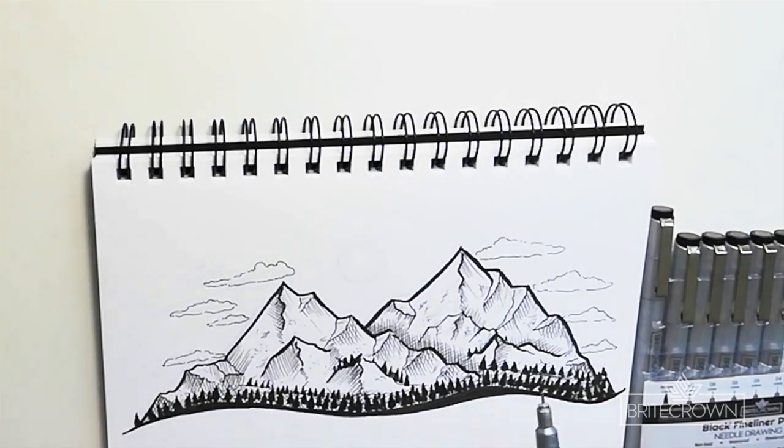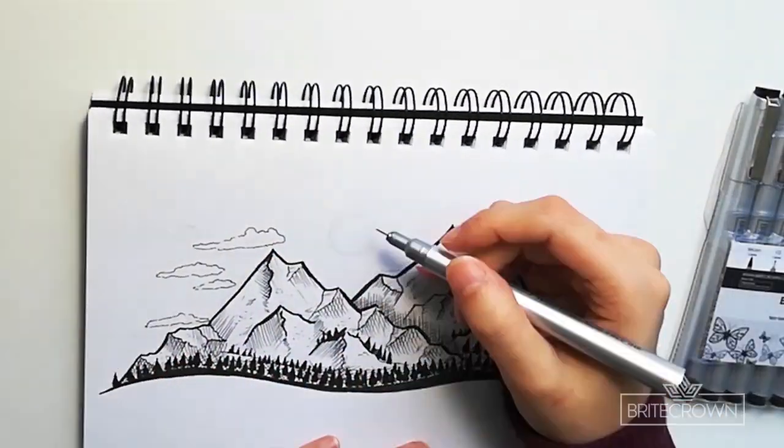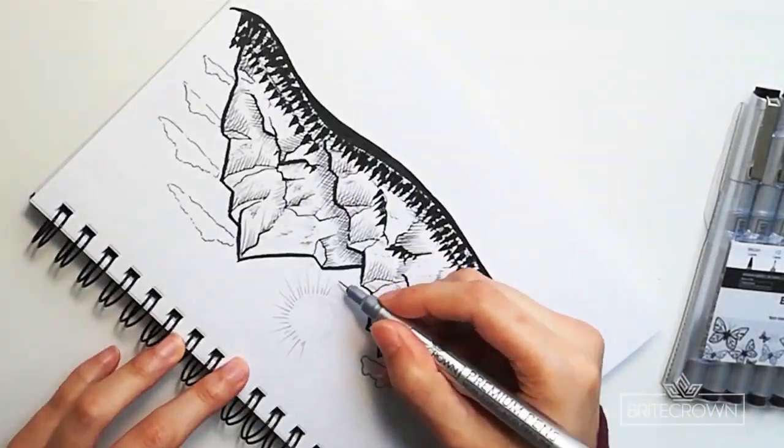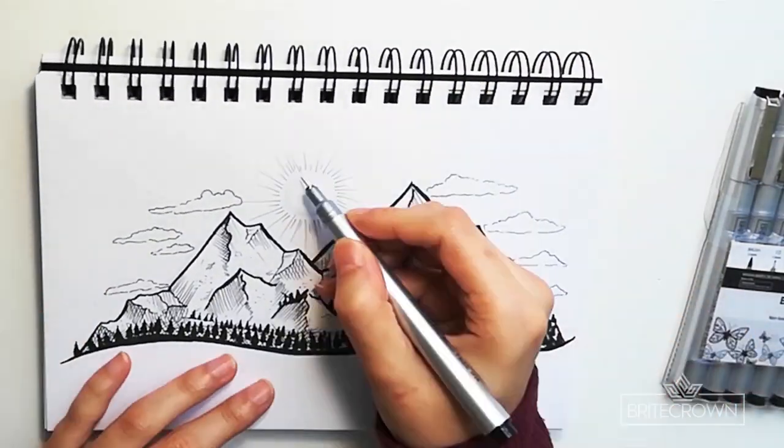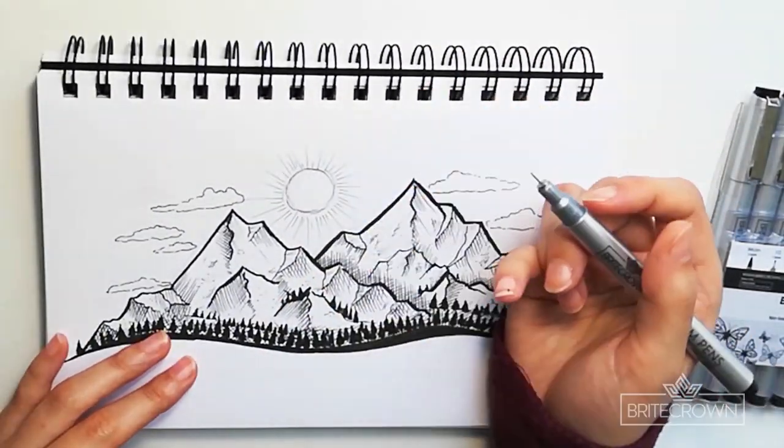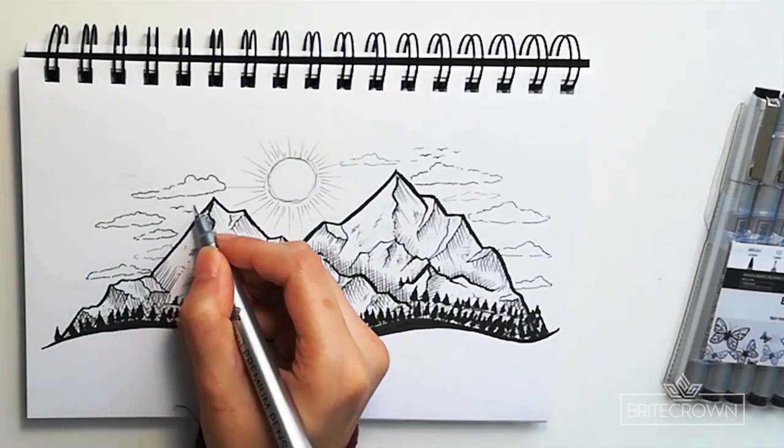And then with the thinnest tip I'm able to create a nice sunshine effect by varying lengths of lines with longer and shorter lines alternating around a circle. And then some birds in the background as well.